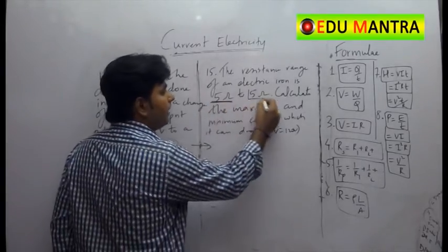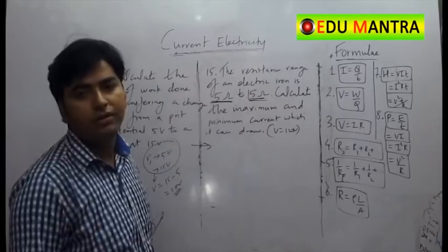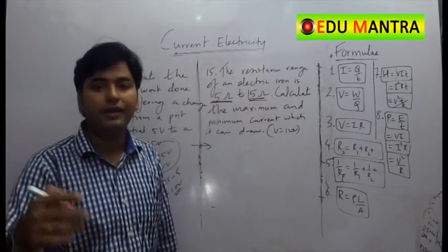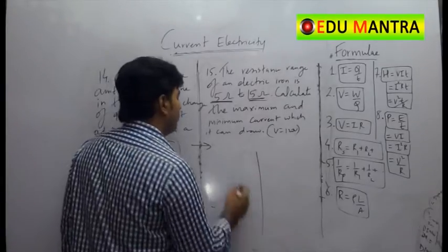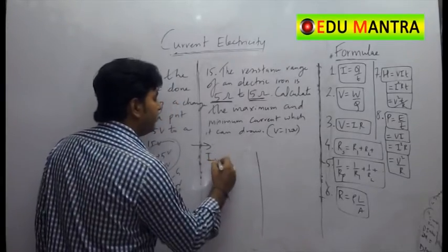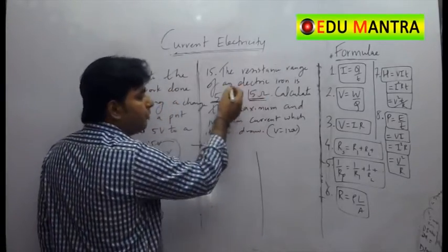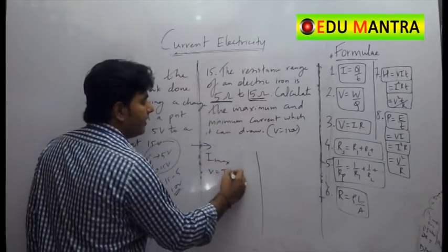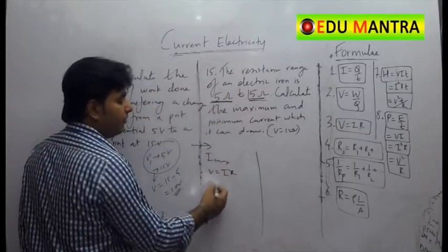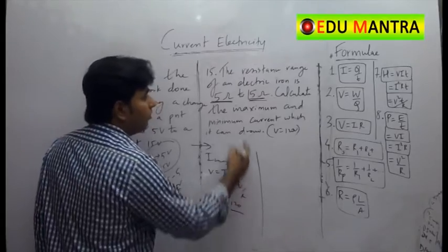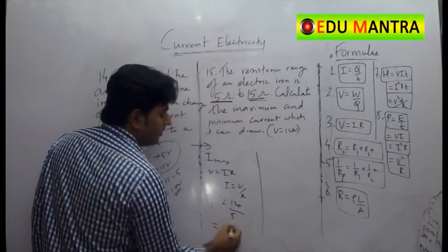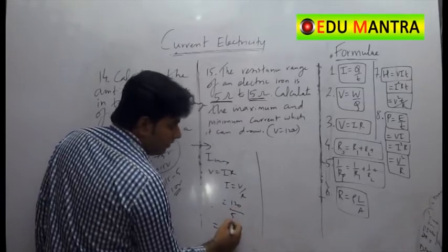And also we know that if the resistance is more, the amount of current is reduced. If the resistance is less, current is more. So, to obtain the maximum current, what we will do? We will take the minimum resistance. So V is equal to IR in both the cases, we will have to use the same formula. I equal to V by R. What is V? V is 120. What is R? Here is 5. So it is 5.